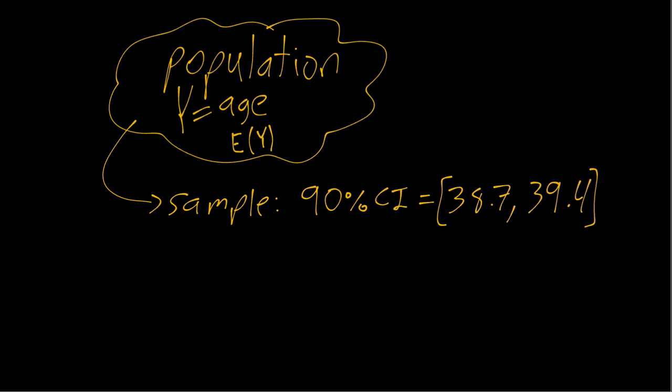This is an example to highlight the difference in interpretation between a Bayesian credible interval and a frequentist confidence interval.